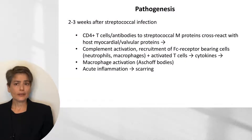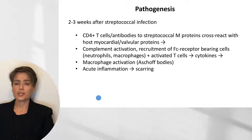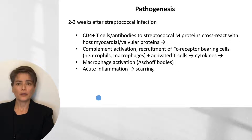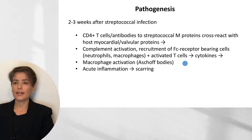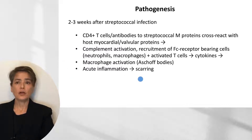How do we get acute rheumatic fever, and what is the pathogenesis? About two to three weeks after a streptococcal infection, we get cross-reaction of CD4-positive T-cells and antibodies to streptococcal M proteins with host myocardial and valvular proteins. This cross-reaction activates complement and recruits FC receptor-bearing cells such as neutrophils and macrophages, as well as activated T-cells. These inflammatory cells elaborate cytokines, activating macrophages and leading to Aschoff bodies, and the resulting significant acute inflammation can lead to scarring.